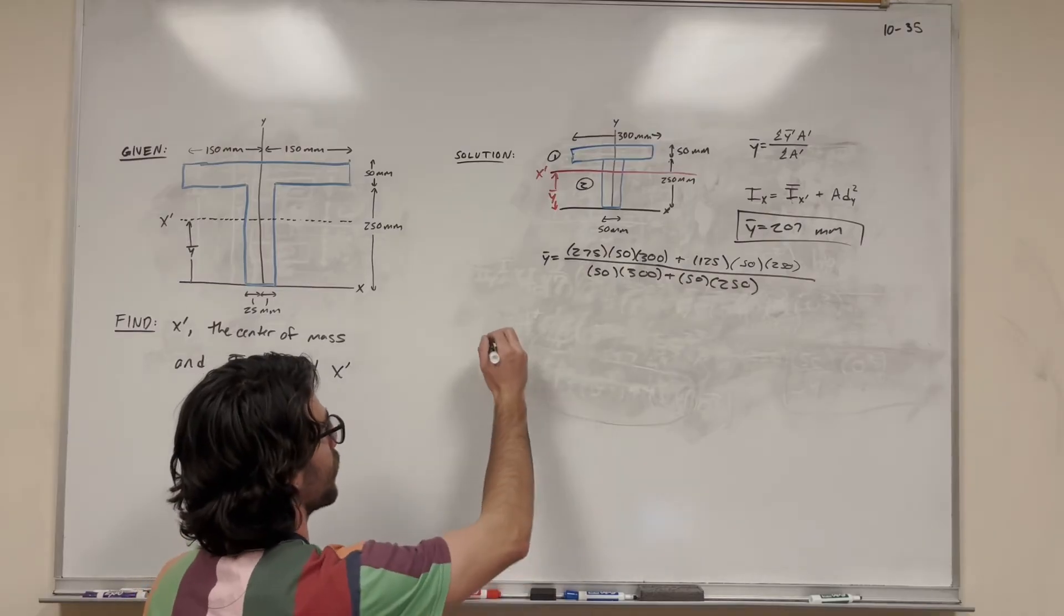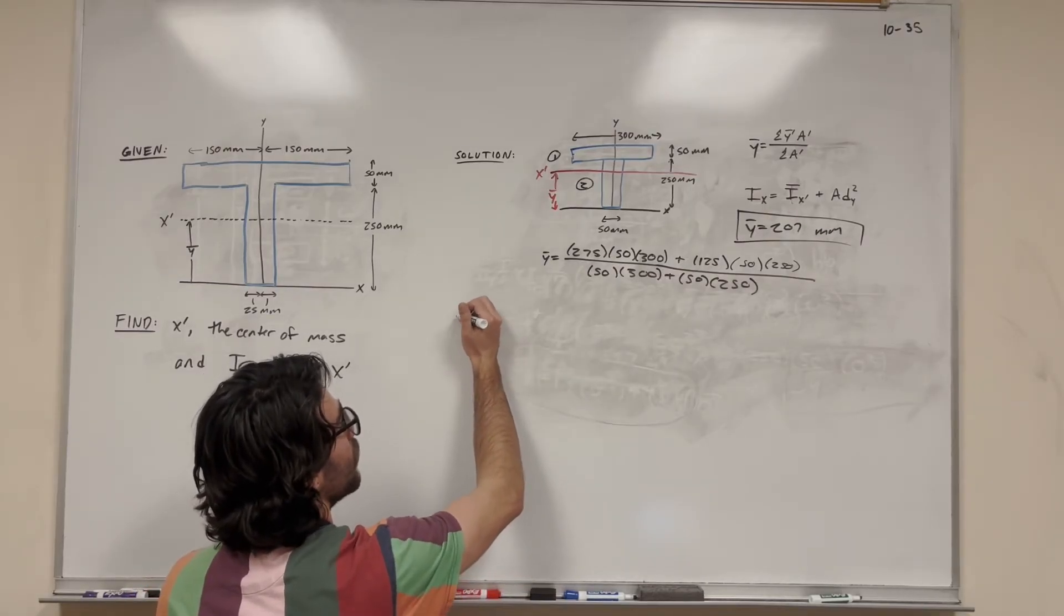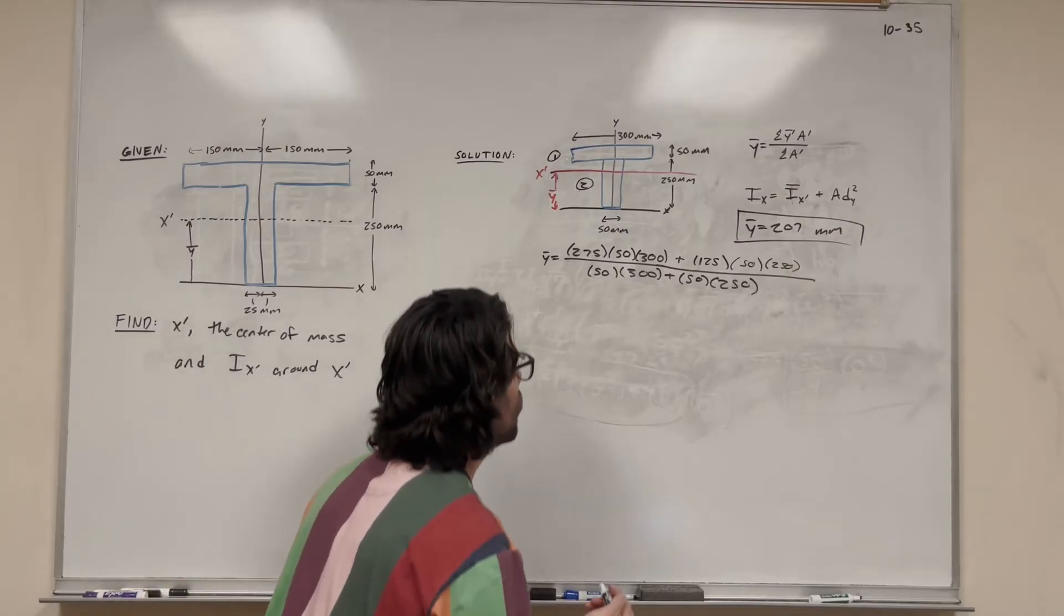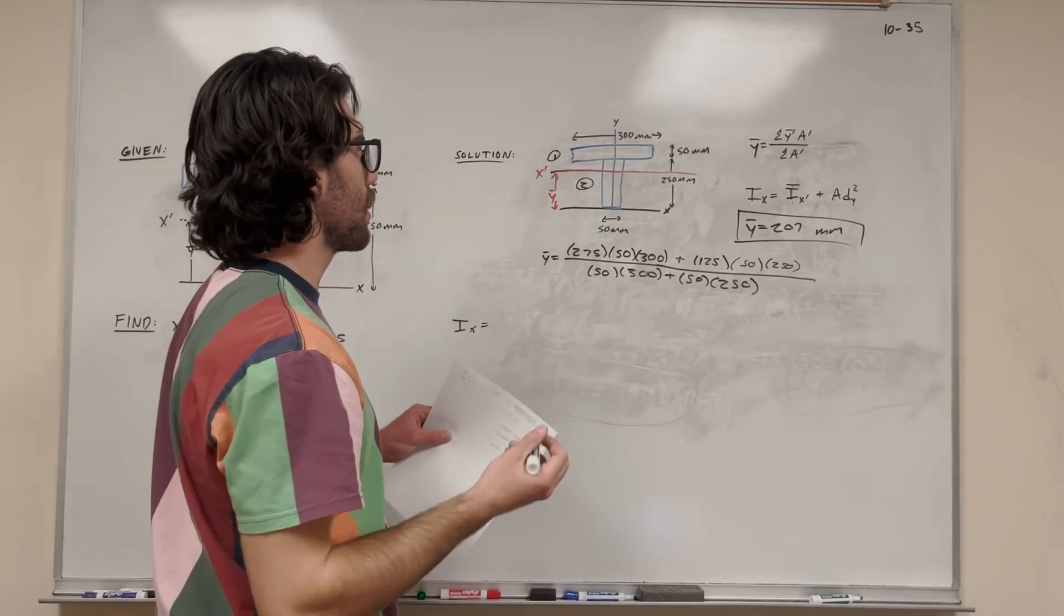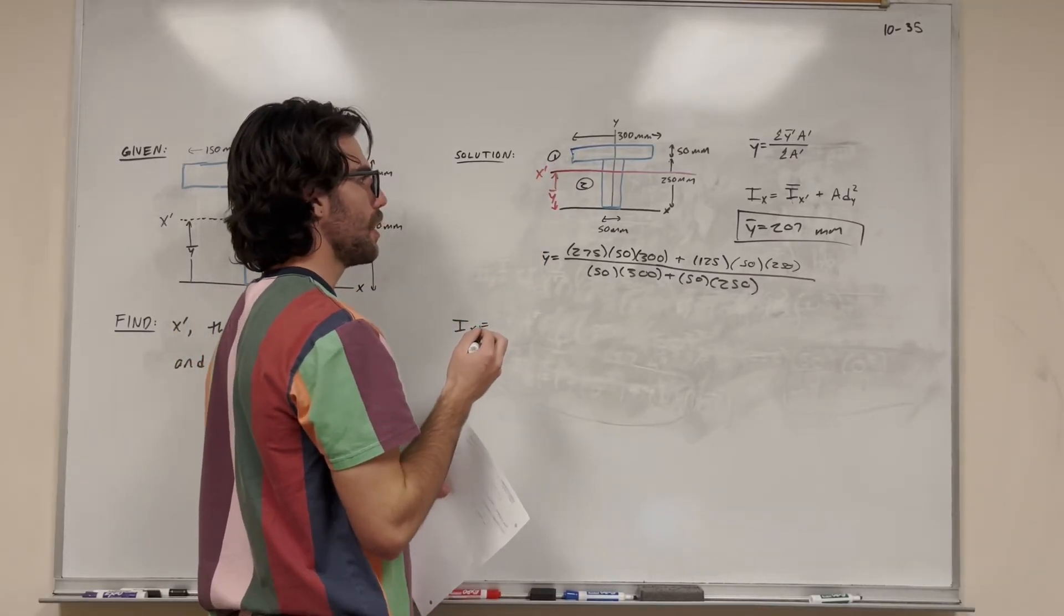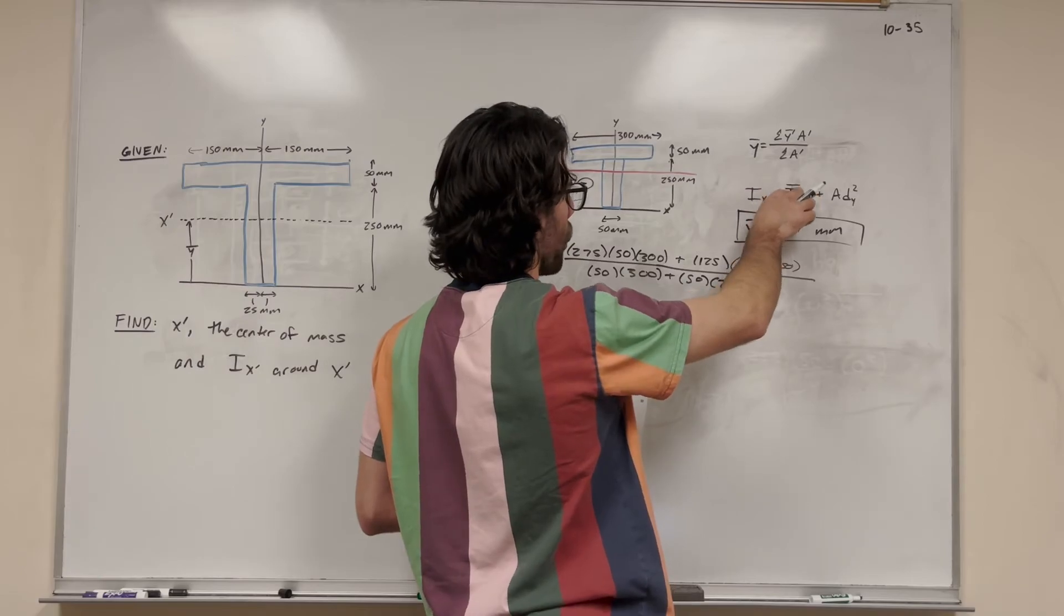So parallel axis theorem, I have it written right there. We're going to start with i of x. So we want to find it around our x prime axis. So that x prime.